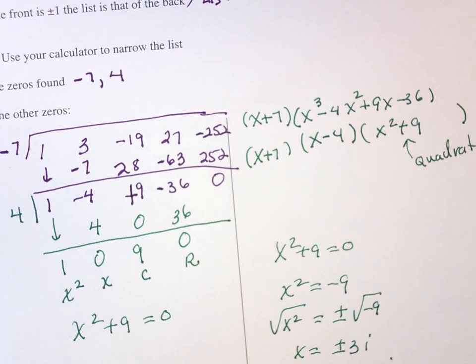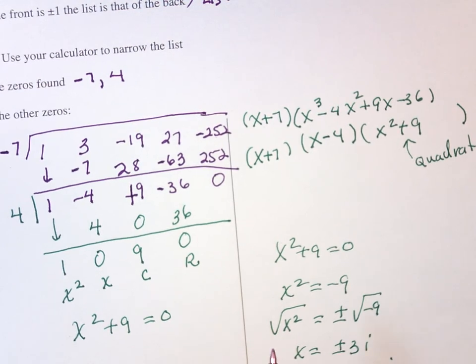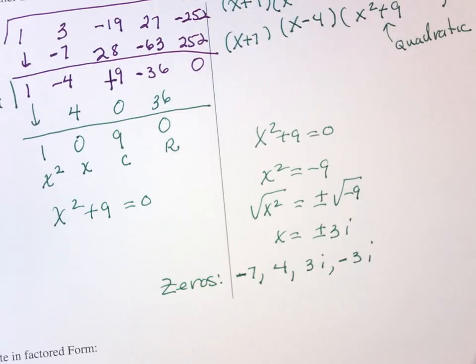Begins with an F. Factors. Factors. Because, if I know the factors, then I know the zeros. So, then it says, write in factored form.